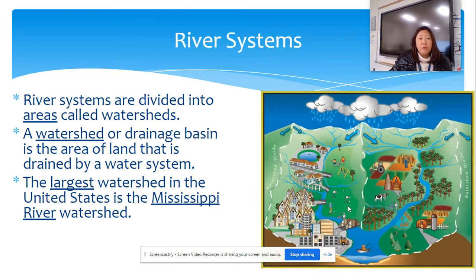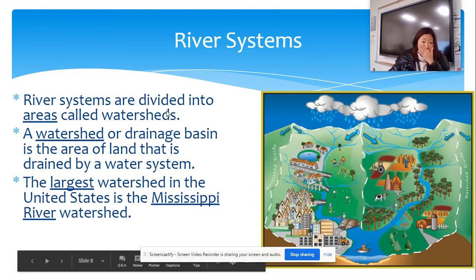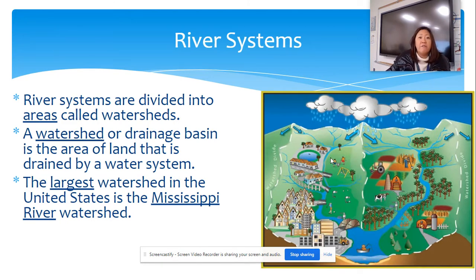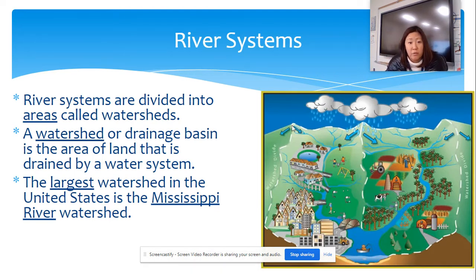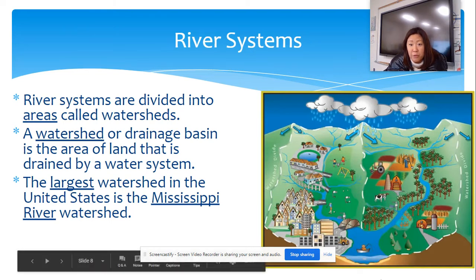River systems are divided into an area called a watershed. A watershed is a very large drainage basin — an area of land that is drained by the water system. The largest watershed in the United States is called the Mississippi. Here is an example of a huge watershed. 'Watershed' and 'drainage basin' are synonyms — they mean the same thing; it's the land that all those rivers are flowing through. Eventually all of these watersheds will flow into an ocean. Rivers always start at the mountain and they flow into the ocean.